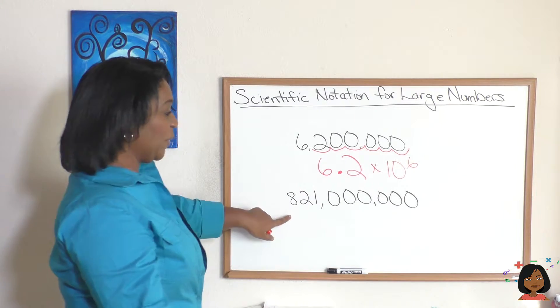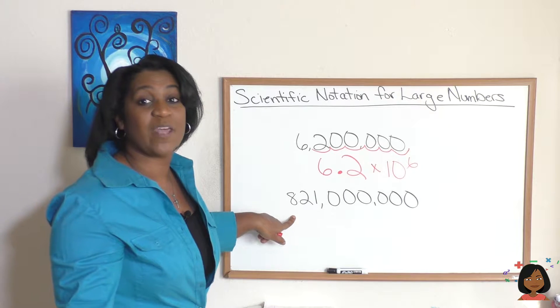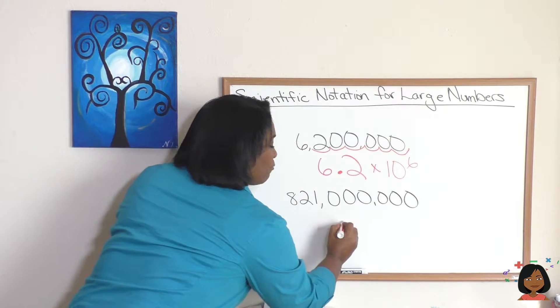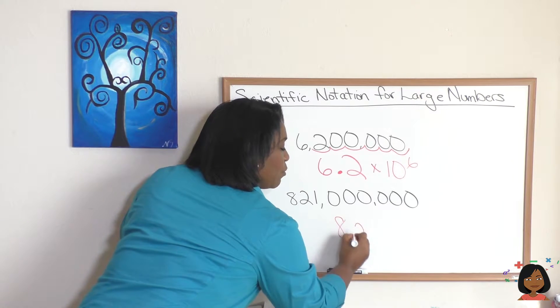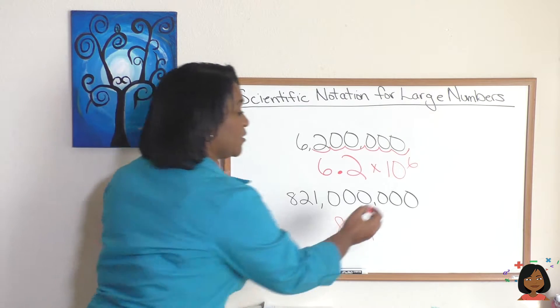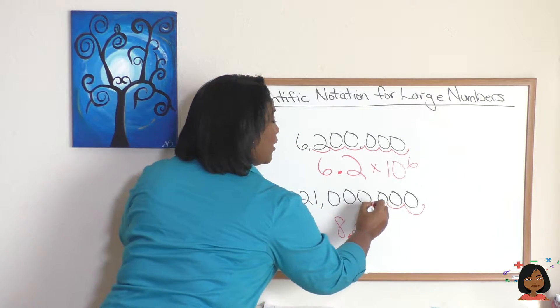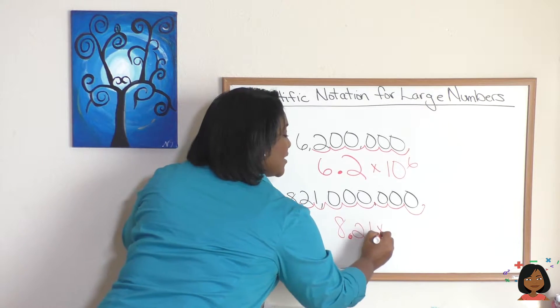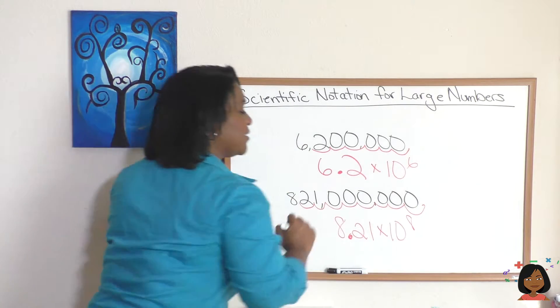Let's try it again. So here we have 821 million. So again, where do I want my decimal? I'm going to put it right after the 8, 8.21. And now let's count how many decimal places we need to shift. 1, 2, 3, 4, 5, 6, 7, 8 times 10 to the eighth.